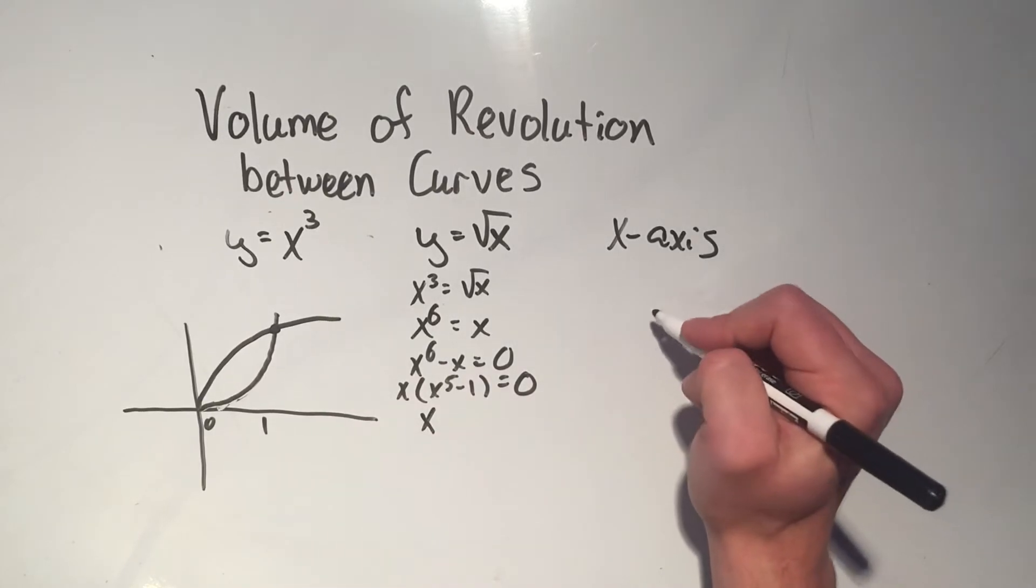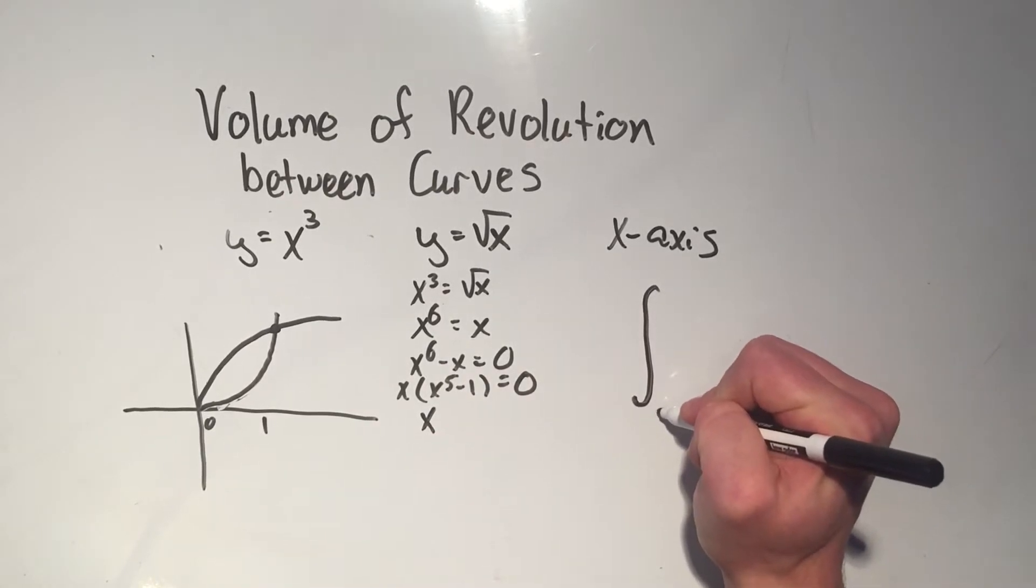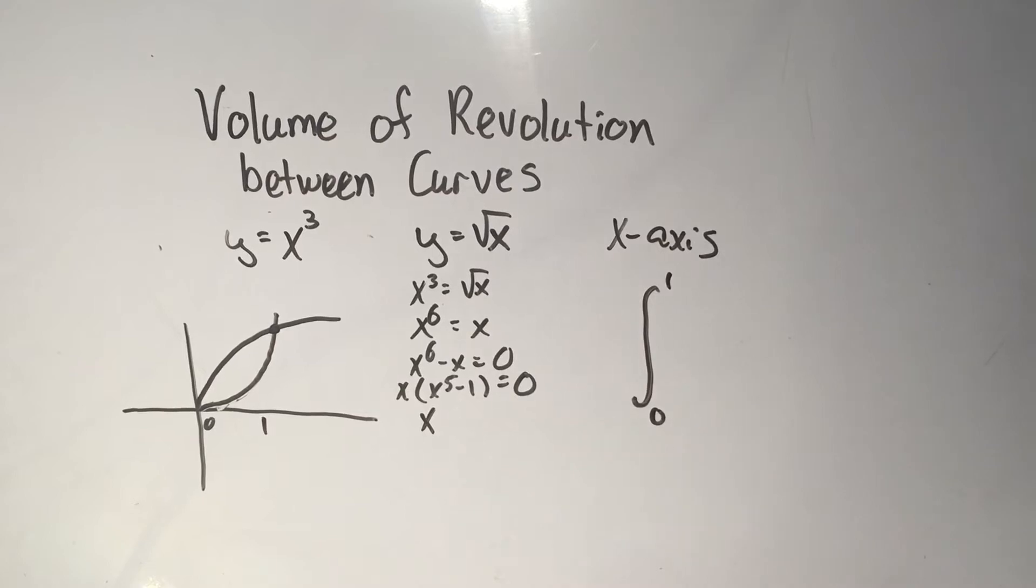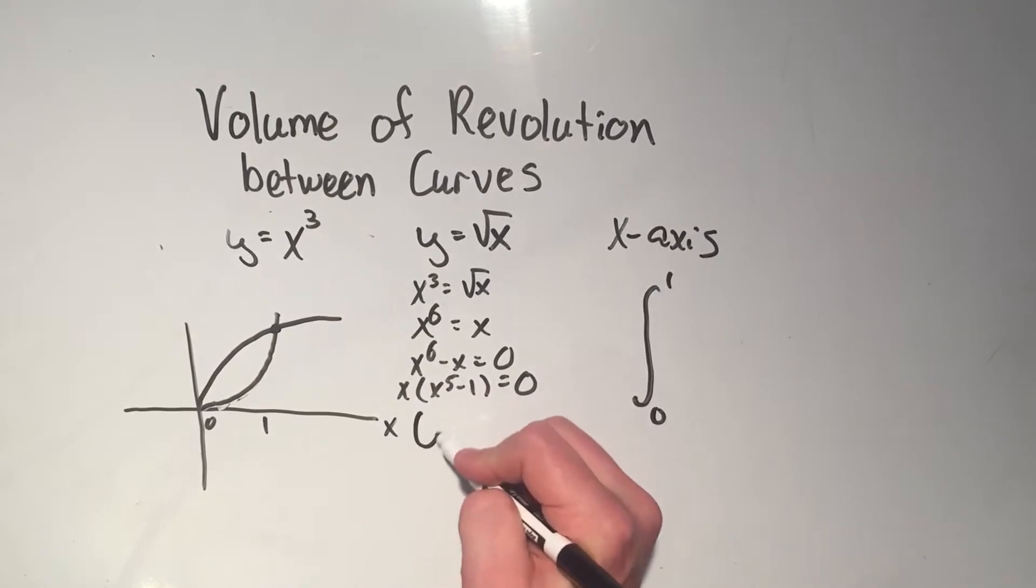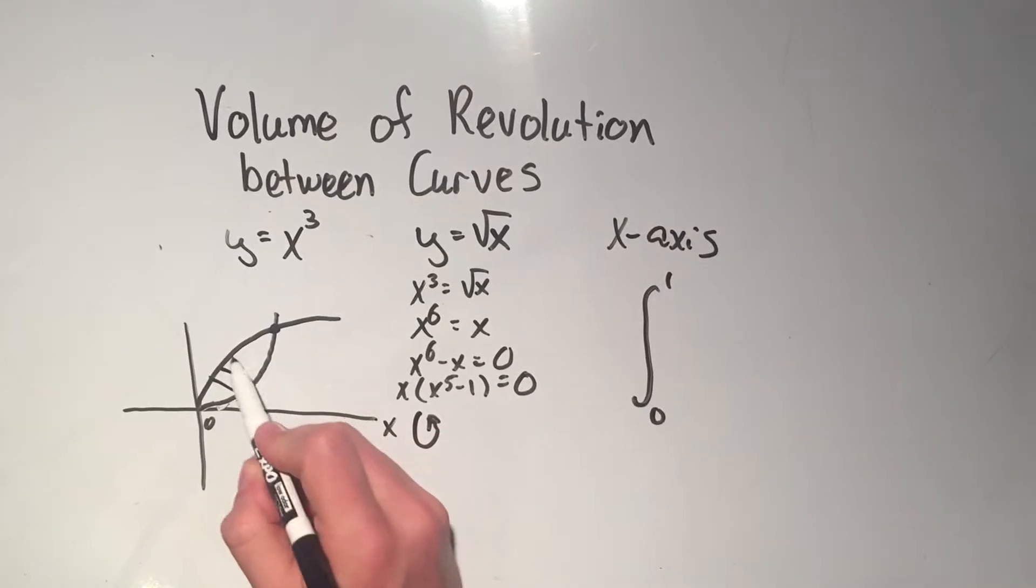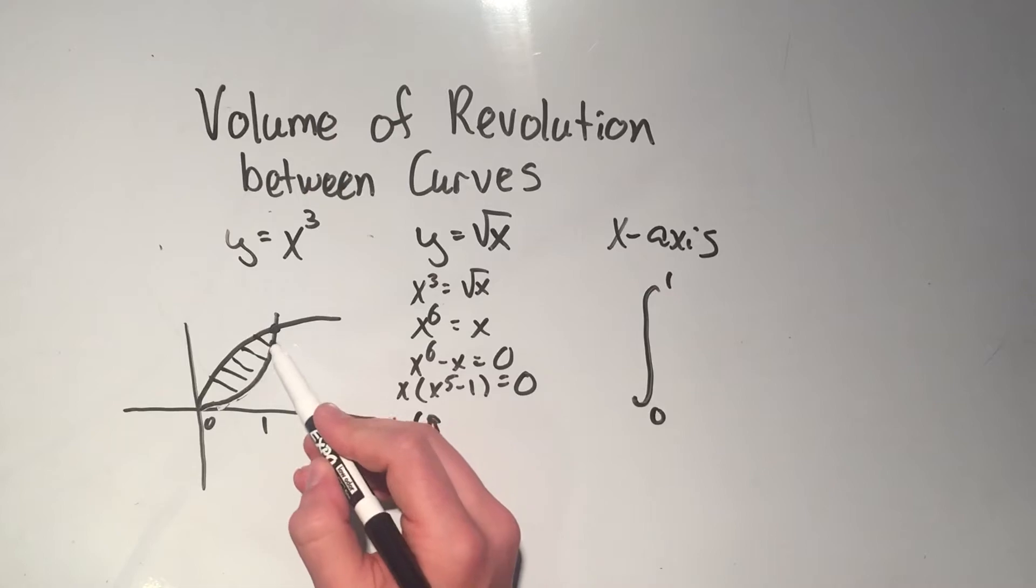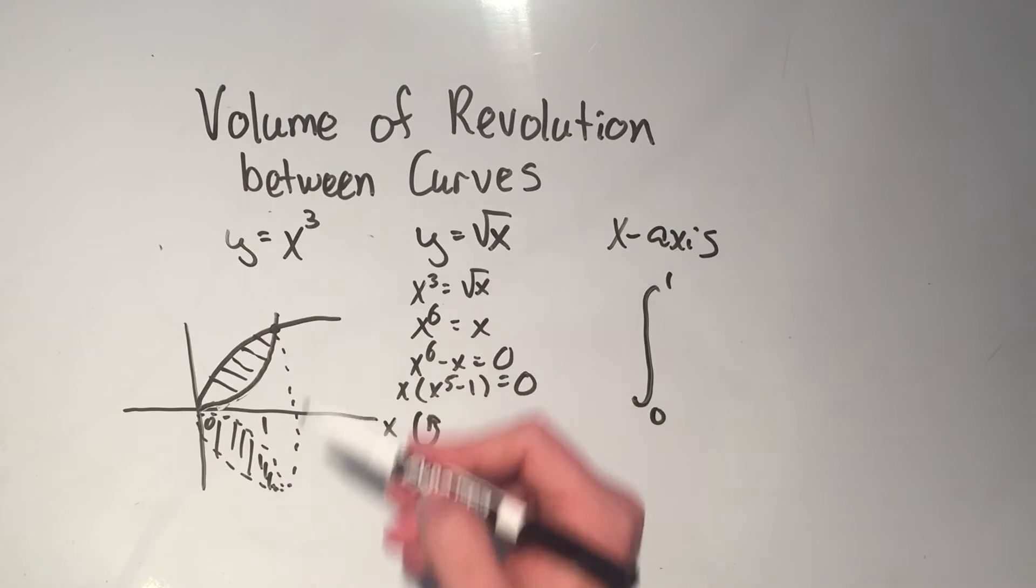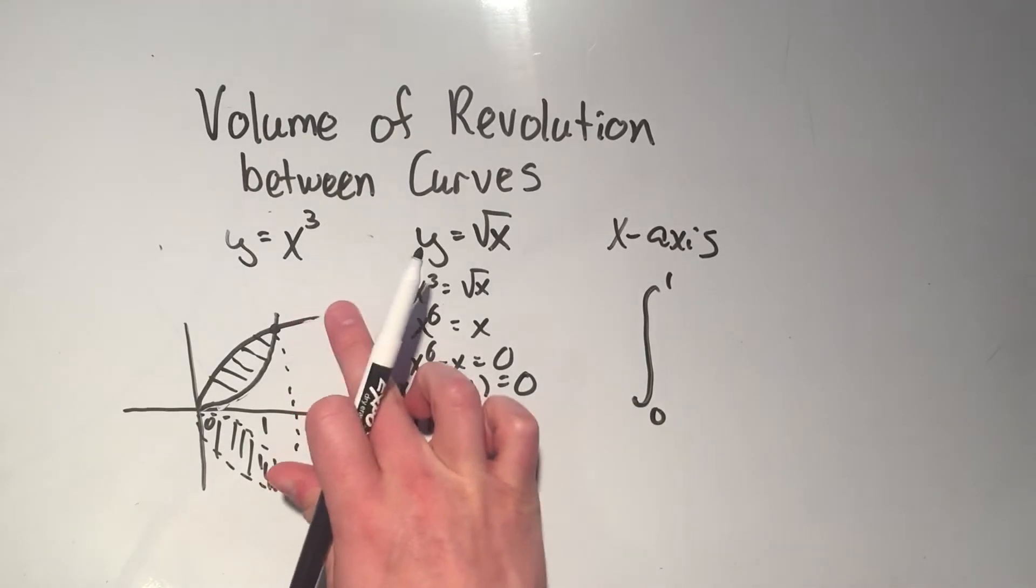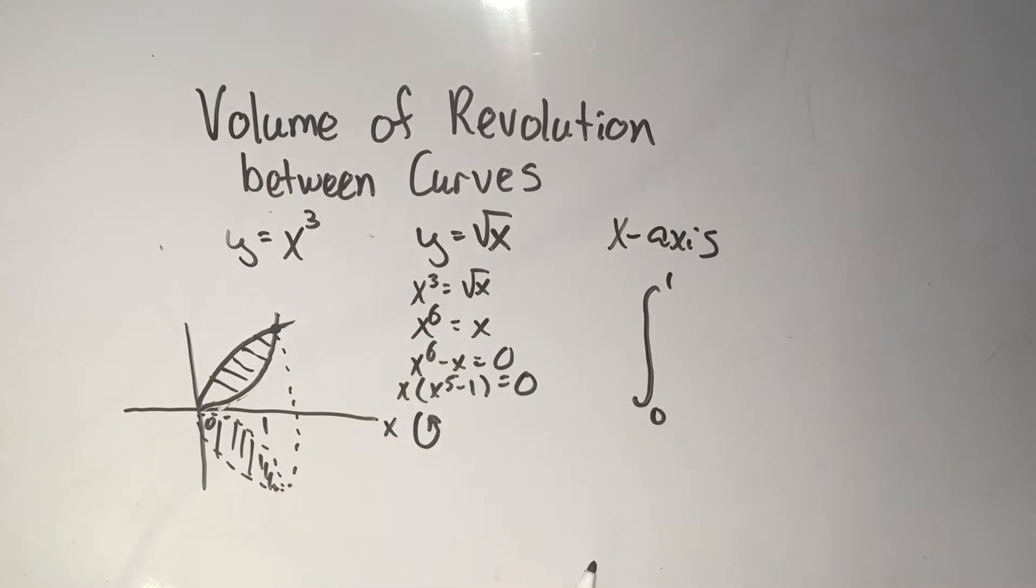So that means when I do my integral, I'll be integrating from zero to one. And since I'm revolving around the x-axis, if I spin this little area around coming out of the whiteboard back in, it's going to make sort of like a double leaf kind of volume. I'm not really sure how to describe that. But nonetheless, that's what it's going to be.